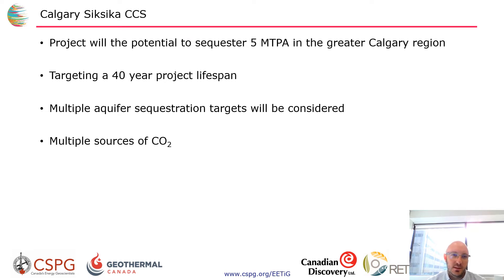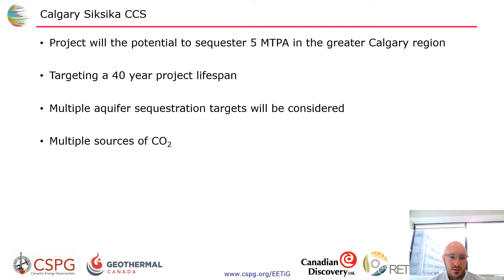So what is the Calgary Siksika CCUS project? It's a project being proposed by Reconciliation Energy Transition Inc., an entity within Project Reconciliation partnered with Siksika First Nation. The project is aiming to sequester five MTPA — just over four times what Shell's Quest project does — targeting a 40-year project lifespan. There will be multiple sources of CO2, facilities tied together, and material field development including compression and pipelines.